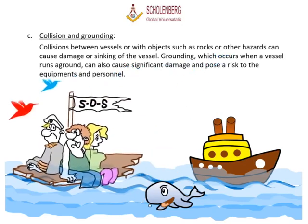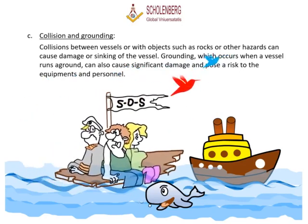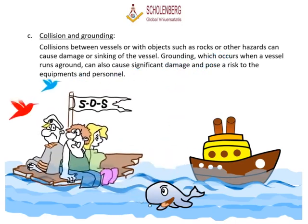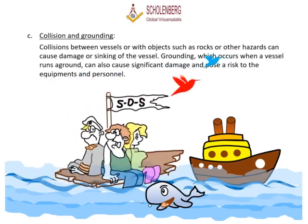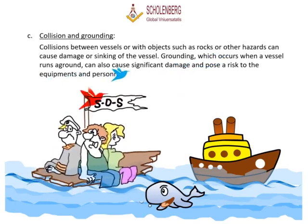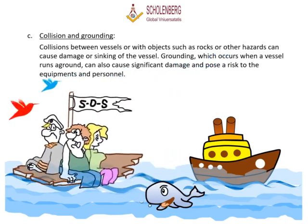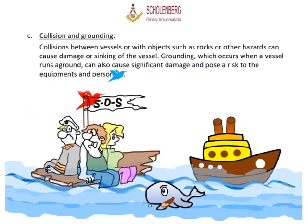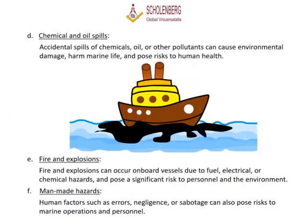C. Collision and Grounding: Collisions between vessels or with objects such as rocks or other hazards can cause damage or sinking of the vessel. Grounding, which occurs when a vessel runs aground, can also cause significant damage and pose a risk to equipment and personnel. D. Chemical and Oil Spills: Accidental spills of chemicals, oil, or other pollutants can cause environmental damage, harm marine life, and pose risks to human health.